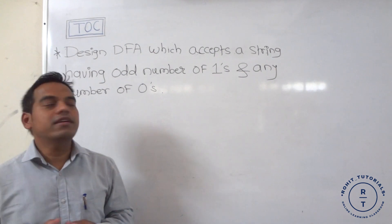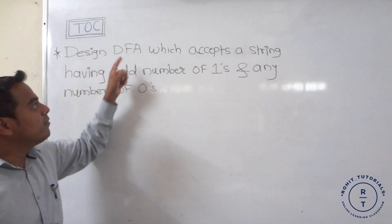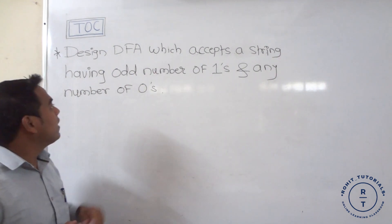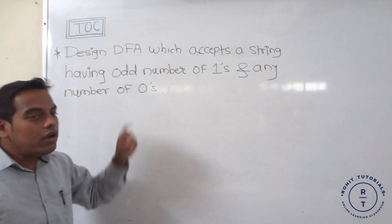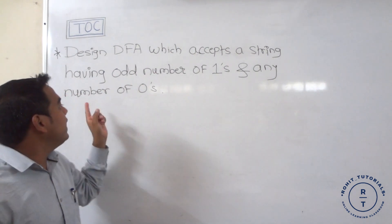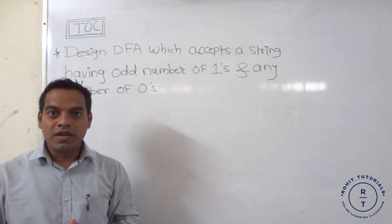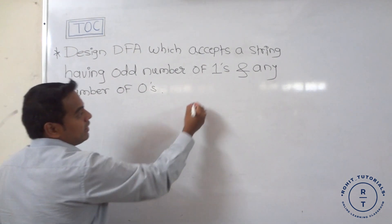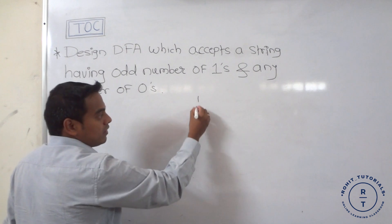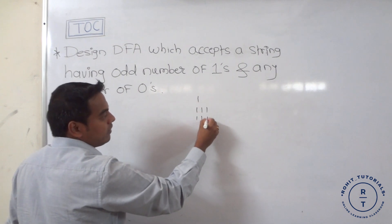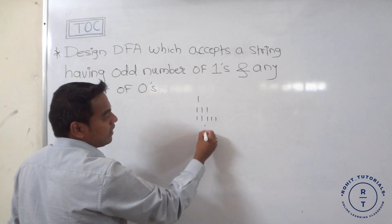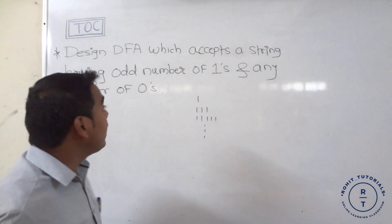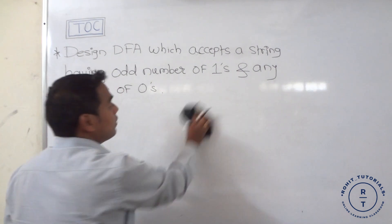The problem statement is: design a deterministic finite automata which accepts a string having an odd number of ones and any number of zeros. Odd number of ones means one appears either one time, three times, five times, and so on. Any number of zeros is also allowed.